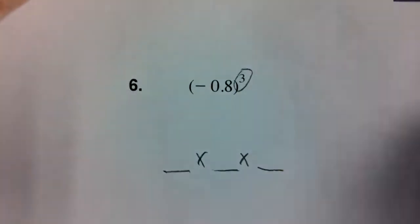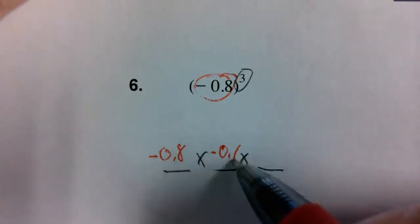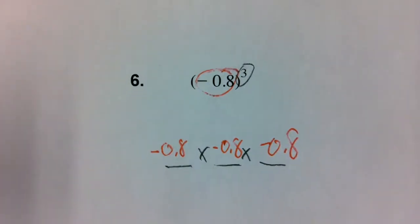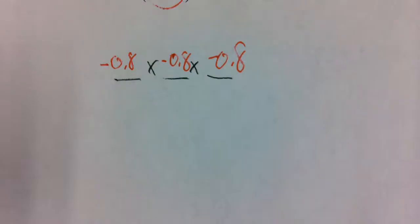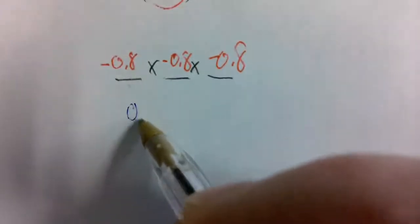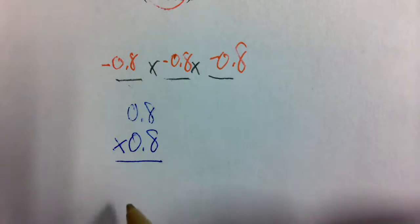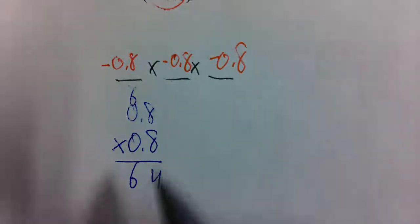Put three little lines with times signs in between. We need the negative 0.8 three times because of that exponent of three. You and I are going to take -0.8 × -0.8 × -0.8. We're going to take them two at a time. We're going to take these first two and multiply them. You've got 0.8 × 0.8. I'm going to leave the negatives behind and come back to that.